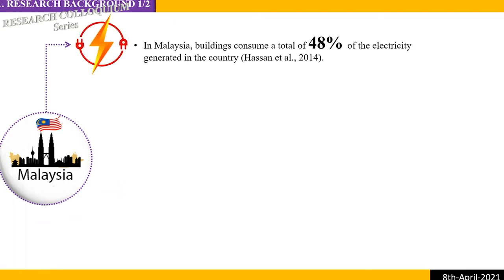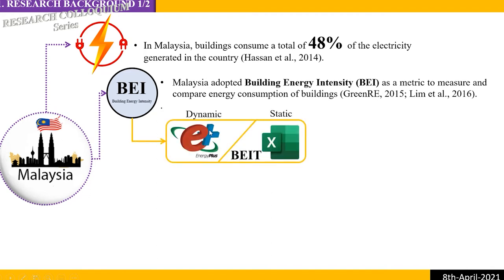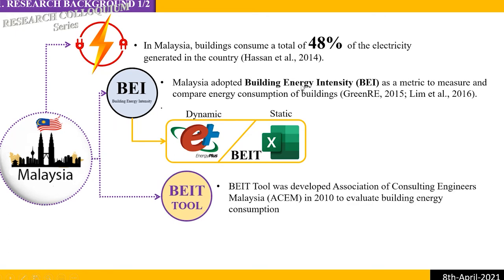It's important to know that buildings consume about 50% of electricity generated in the country. BI — Building Energy Intensity — has been adopted by Malaysia as a metric to measure and compare the energy consumption of buildings. To assess BI, there are two main methods: either use a dynamic simulation engine like EnergyPlus, or use an Excel-based tool called BIT, which is available in Malaysia and follows a static model for calculating energy intensity.